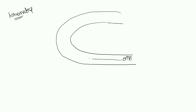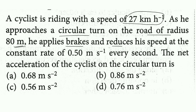So, this is my road. The cyclist is driving a cycle with an initial velocity equal to 27 km per hour. This is my center of the road, so the radius of the road is R = 80 meters. When he approaches the circular turn, he applies brakes and reduces his speed at the constant rate of 0.5 meter per second every second.